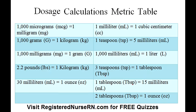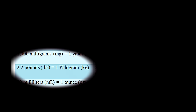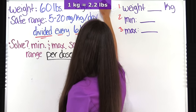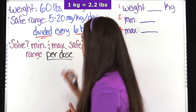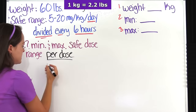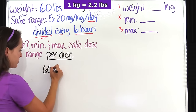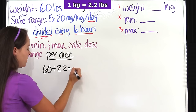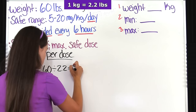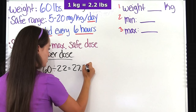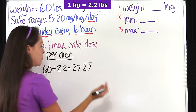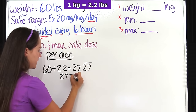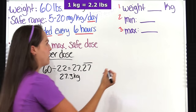We know from our metric table that one kilogram equals 2.2 pounds. So we take 60, which is the patient's weight in pounds, and divide that by 2.2. When we divide that out, we get 27.27 repeating, and we're going to round to the nearest tenth. So it's 27.3 kilograms — that's how much our patient weighs.